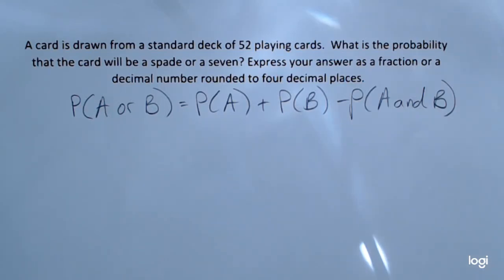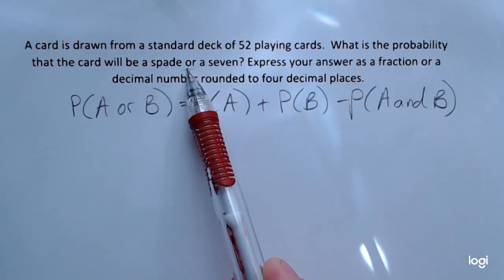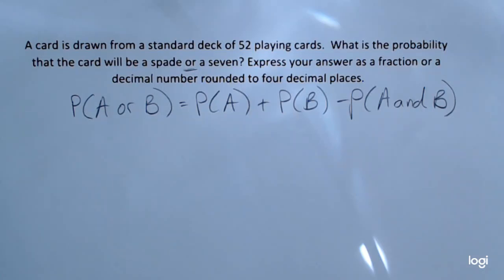I'm going to use the addition rule for probability. One clue is the word OR here. When you see the word OR or it's implied in the problem, it's typically going to be the addition rule for probability.